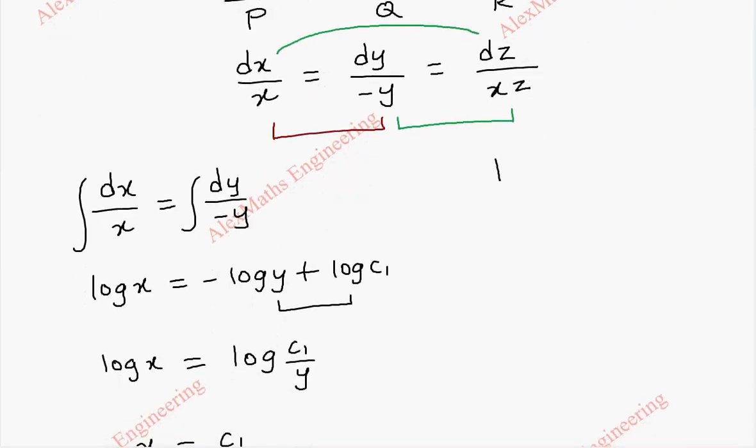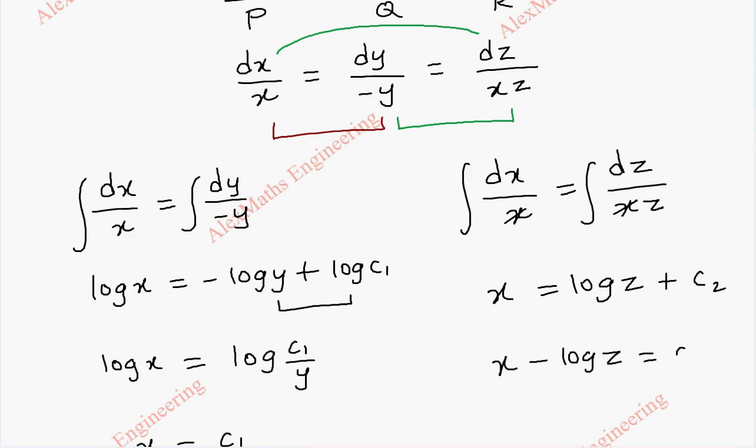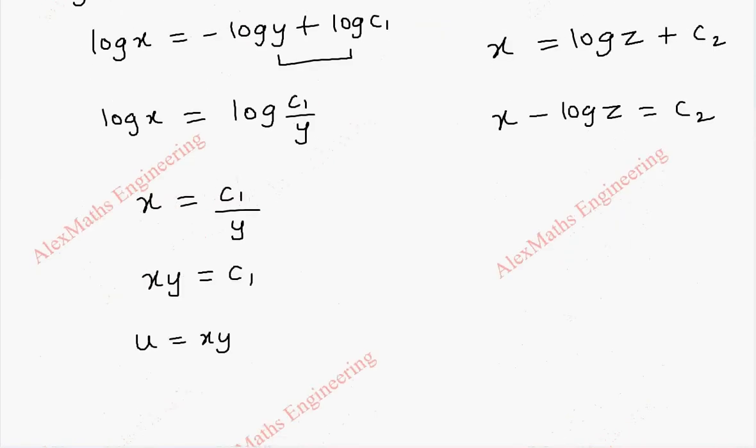Without any substitution, we can continue the integration. That is, dx by x is equal to dz by xz. We can cancel this. On integration, this we get x equal to log z plus c2. So, x minus log z will be our c2 and this is taken as v. v is x minus log z.